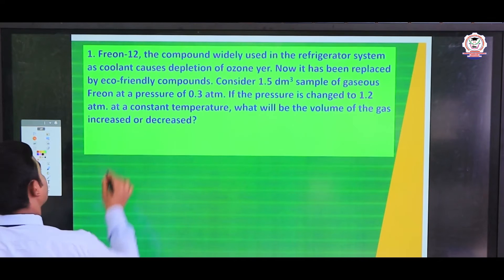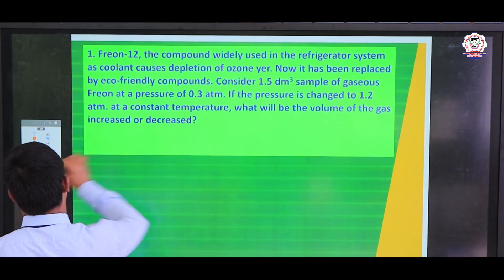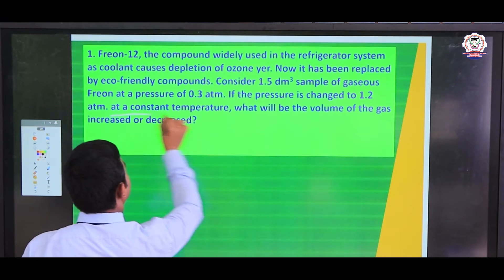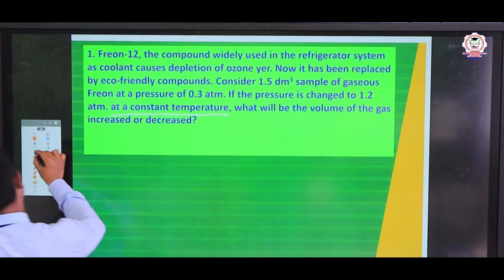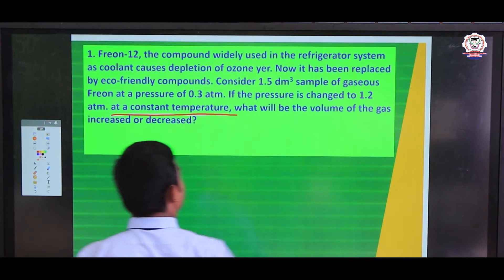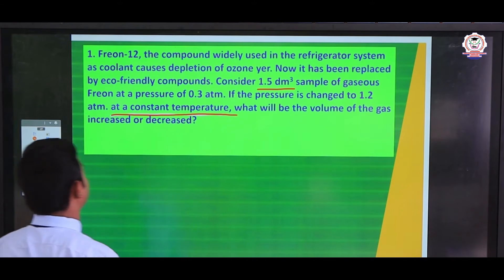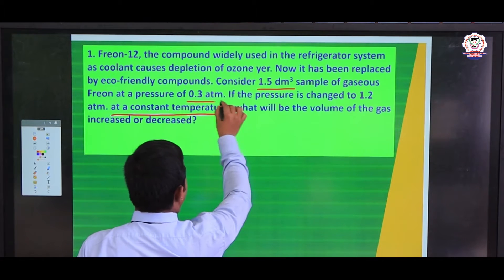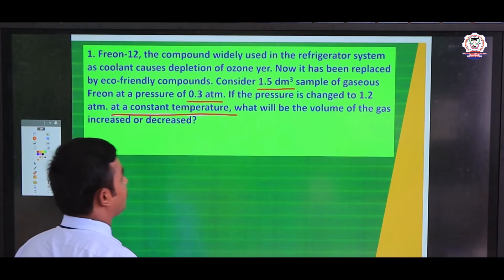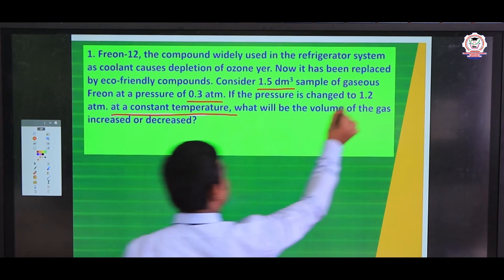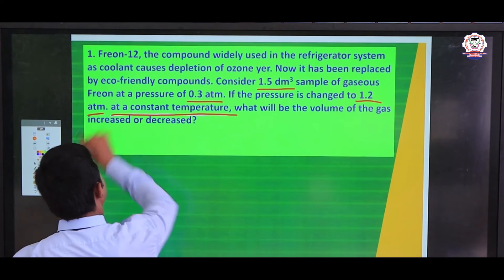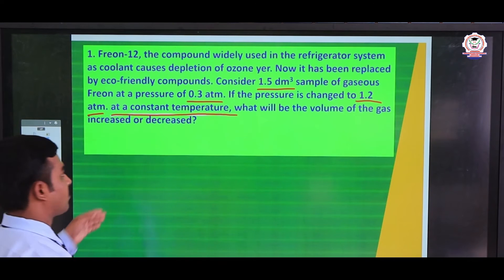We see the terms: constant temperature, and here the volume value 1.5 dm³ and pressure value 0.3 atmosphere, and pressure is changed again into 1.2 atmosphere. What will be the next volume?